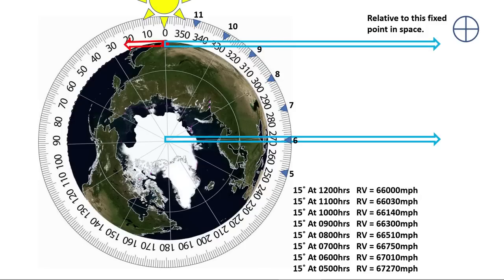At 1200 hours, your velocity is 66000 mph. The red numbers are the difference from the last velocity to this point. From 0500 hours to 0600 hours, your velocity has decreased by 260 mph. Your acceleration is minus 3.23 cm per second squared.